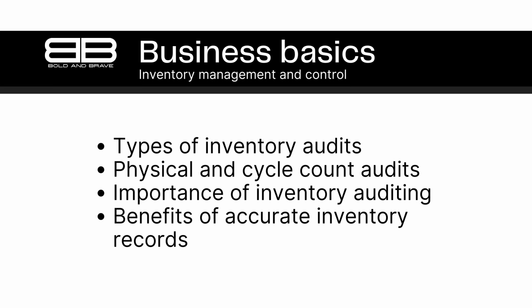This helps businesses to identify any discrepancies and ensure that their inventory records are up to date and accurate. There are several different types of inventory audits. A physical inventory audit involves physically counting all of the inventory on hand, while a cycle count audit involves counting a small subset of inventory on a regular basis to verify inventory records over time. Both types of audits are important for maintaining accurate inventory records and identifying any issues or discrepancies.